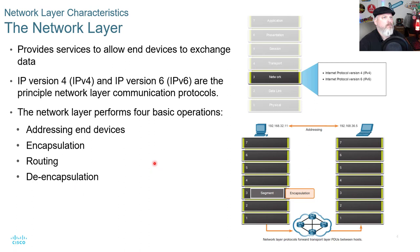Looking at the OSI model image, Layer 3 performs encapsulation on its segment, sends it down to the medium, transmits it across, and then de-encapsulates it at Layer 3 on the receiving end.